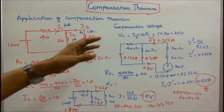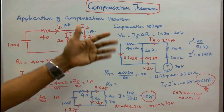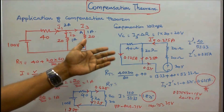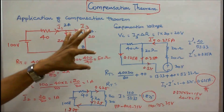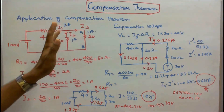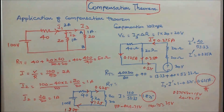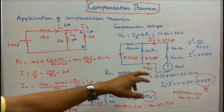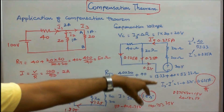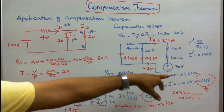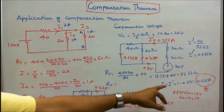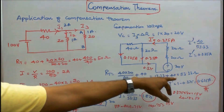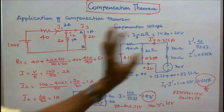As per the compensation theorem, by changing any resistance in the branch, naturally the current also changes, as does the voltage. Therefore, the new current in the modified branch is I3 minus I dash: I3 equals 1, so 1 minus 0.375 equals 0.625 amps.